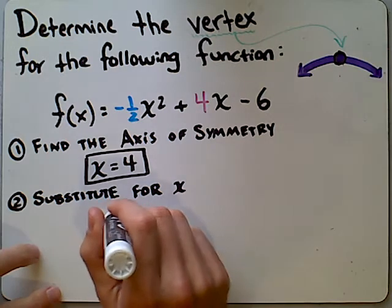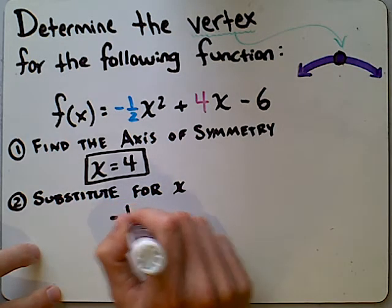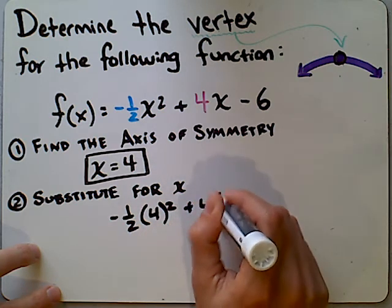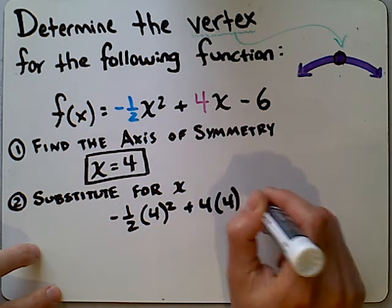I'm going to take the right side of this equation and take out the x. I'm going to put a 4 here and I will put another 4 right here in the parentheses.